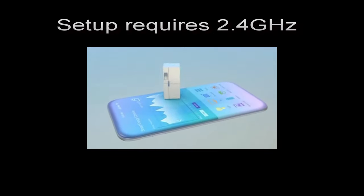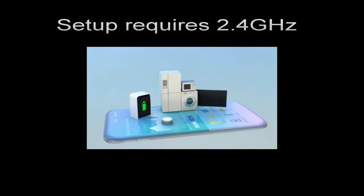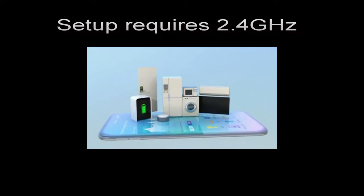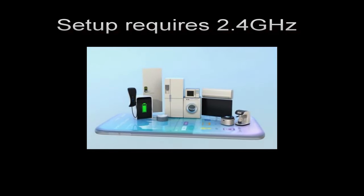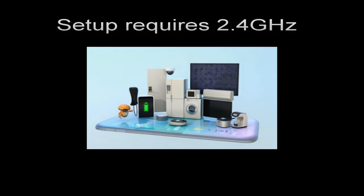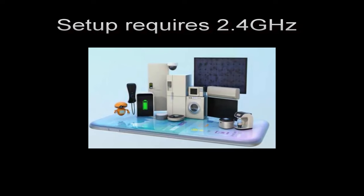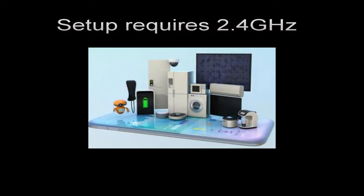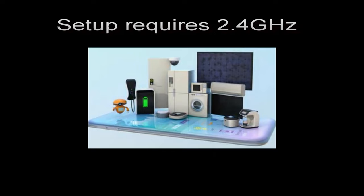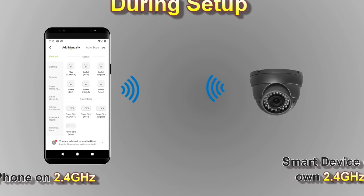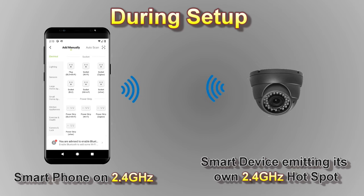Many, if not most, smart security devices like cameras, light bulbs, and smart plugs require that you connect using the 2.4 GHz Wi-Fi network during setup. During setup, you need to configure your device over Wi-Fi, but your new device has no idea what your network SSID is or the password to connect. To get around this, the device emits its own Wi-Fi hotspot using the 2.4 GHz band. This is why your smartphone or tablet needs to be on the 2.4 GHz band as well — otherwise it will never be able to communicate with the device.